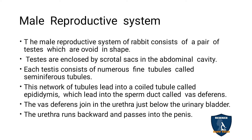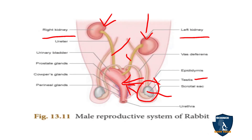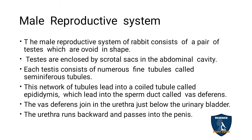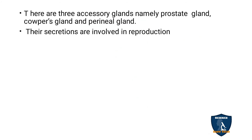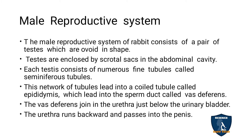Each testis has numerous tubules called seminiferous tubules. The network of these tubules leads to a coiled tubule called the epididymis, which then leads into the sperm duct called the vas deferens.